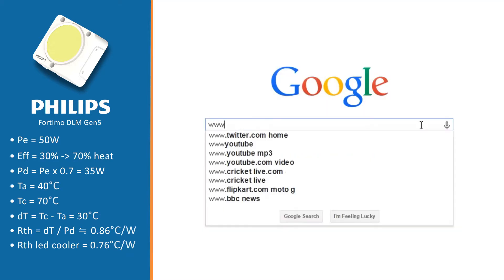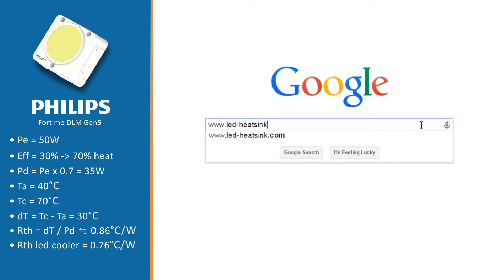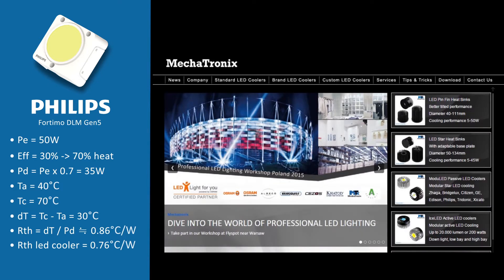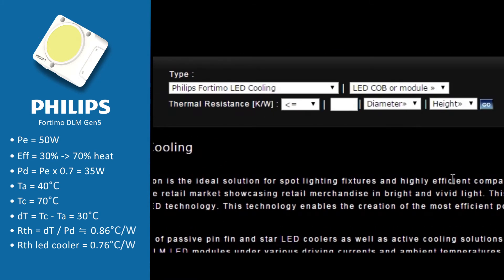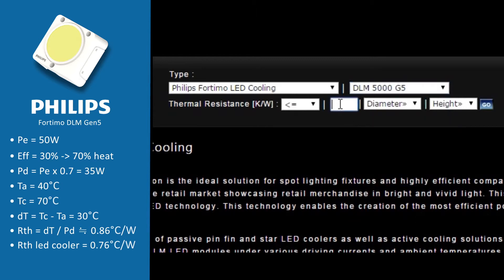We now go to our website, www.led-heatsink.com, and we go to the section of Philips. On the top right side, we first select our LED module — that was the Fortimo DLM5000. Then we fill out our calculated value of the thermal resistance, 0.76 degrees Celsius per watt, and we click on go.